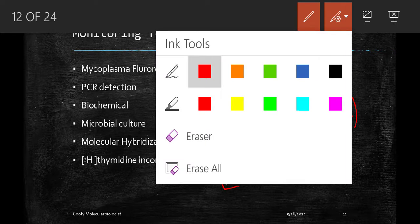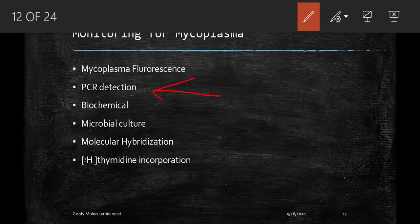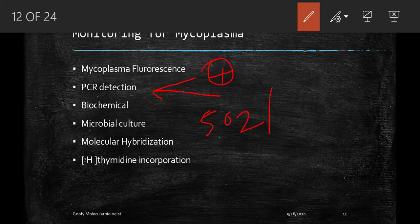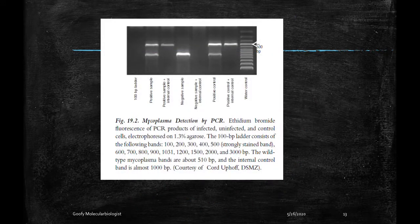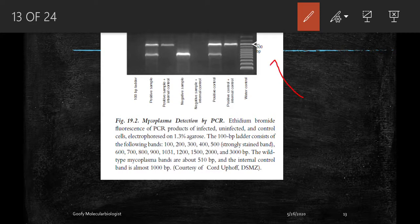For PCR detection, mycoplasma-positive strands will show bands at 502 and 520 base pairs, while the control DNA will show a band at 986 base pairs. In the diagram shown, samples showing bands at the 500 base pair region are confirmed mycoplasma-positive cases.